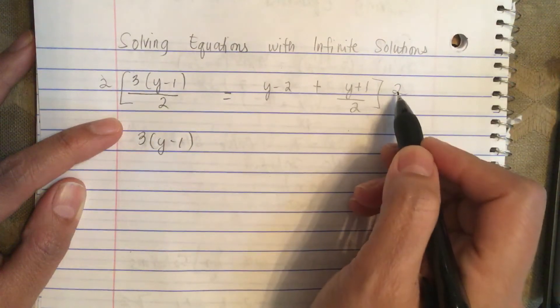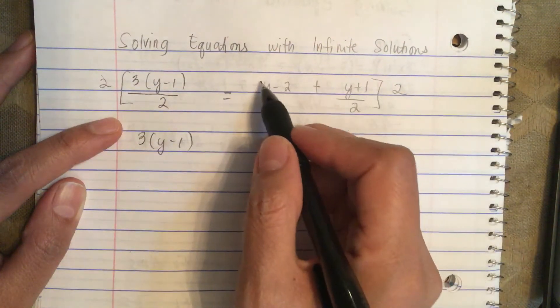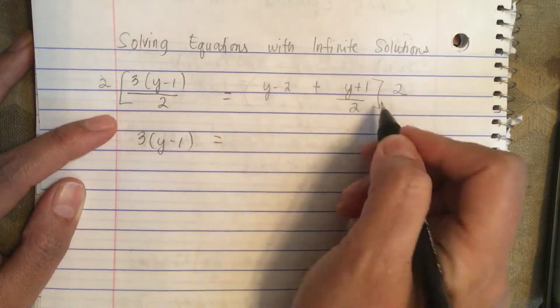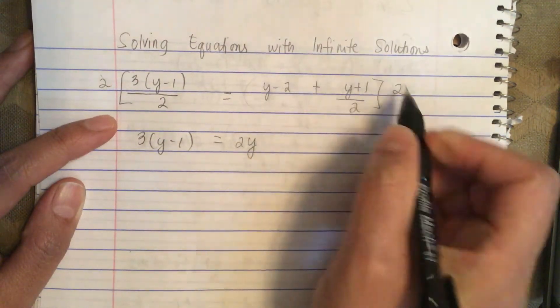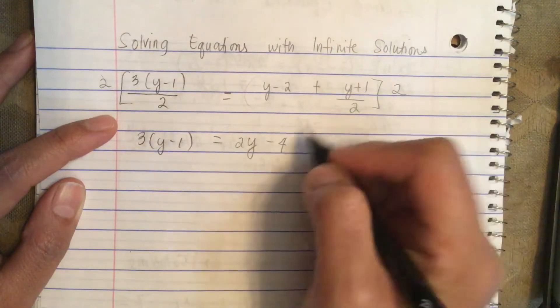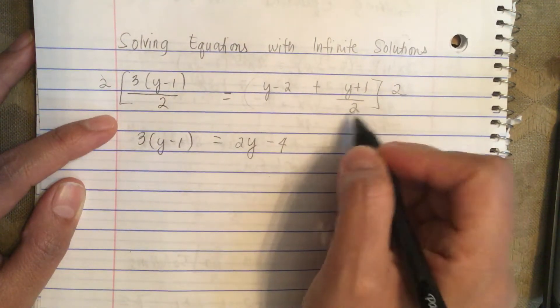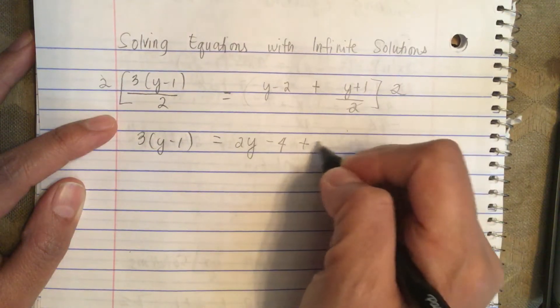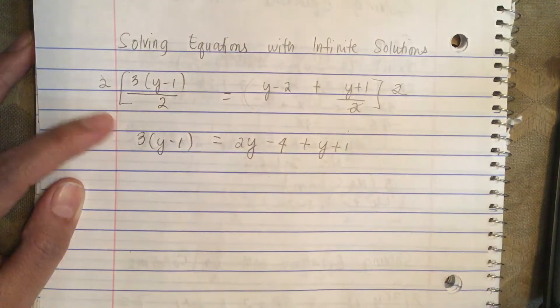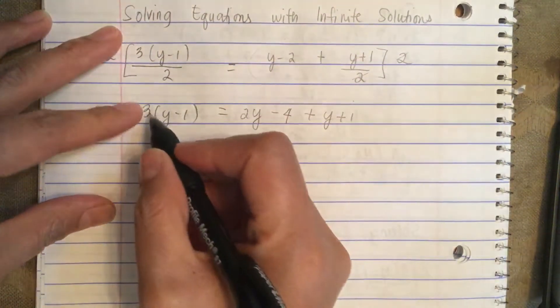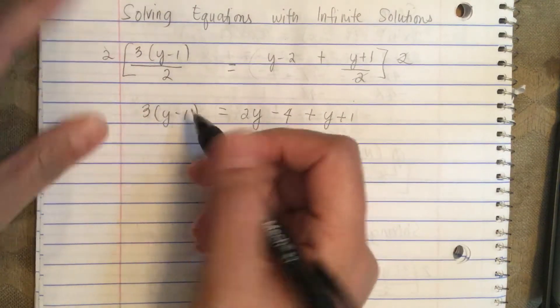Now we distribute the 2 inside the parentheses, so we have 2y. Two times -2 is -4. Now this cancels that, so we just have y+1. Now we combine like terms and also distribute the 3 inside the parentheses.